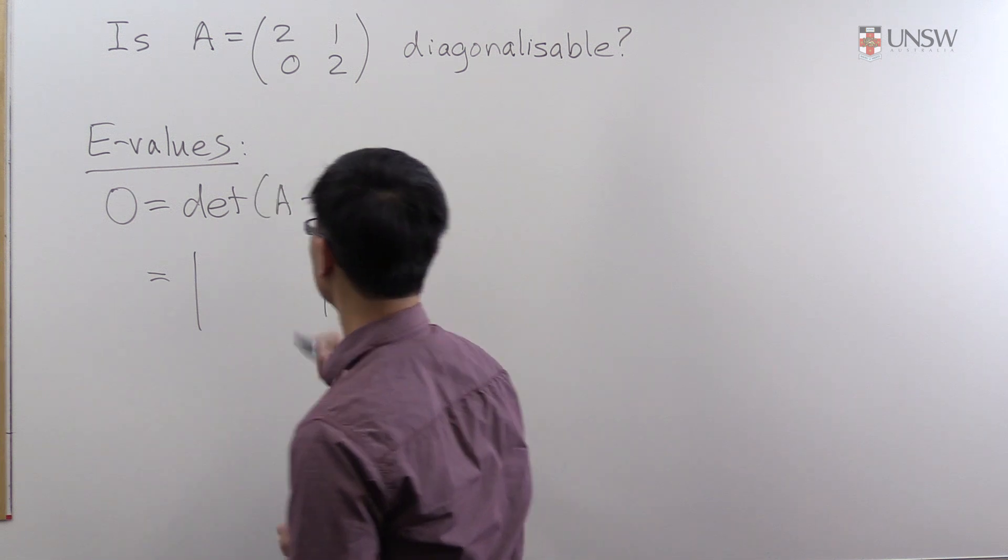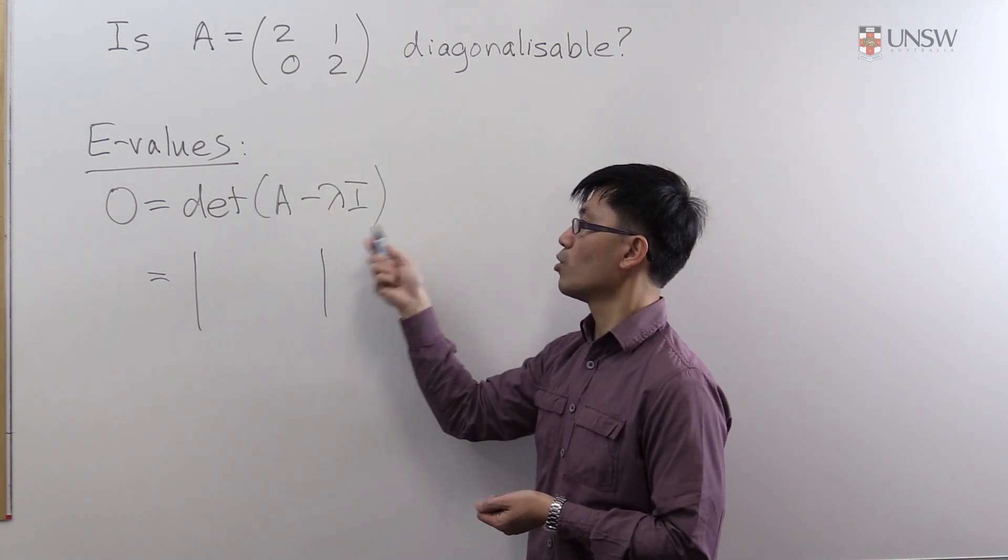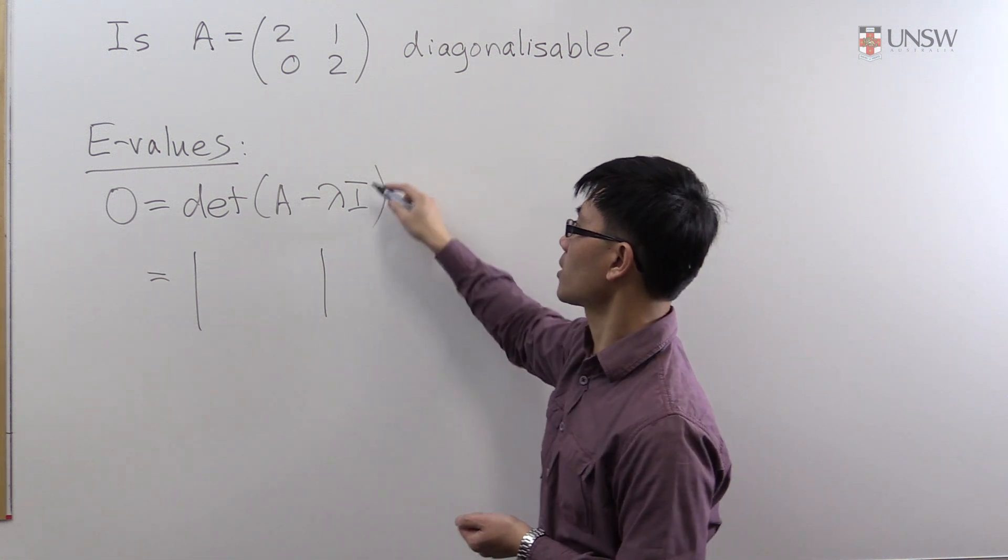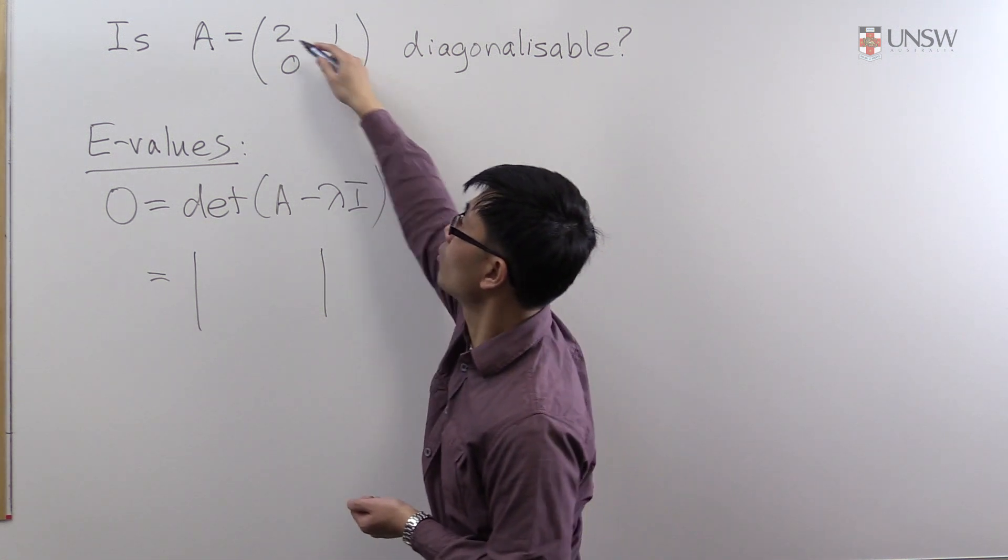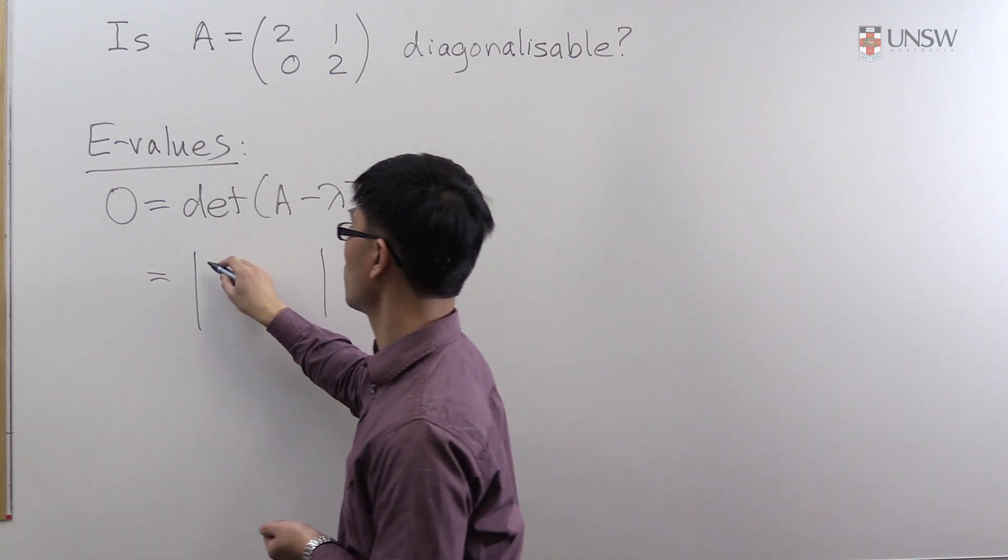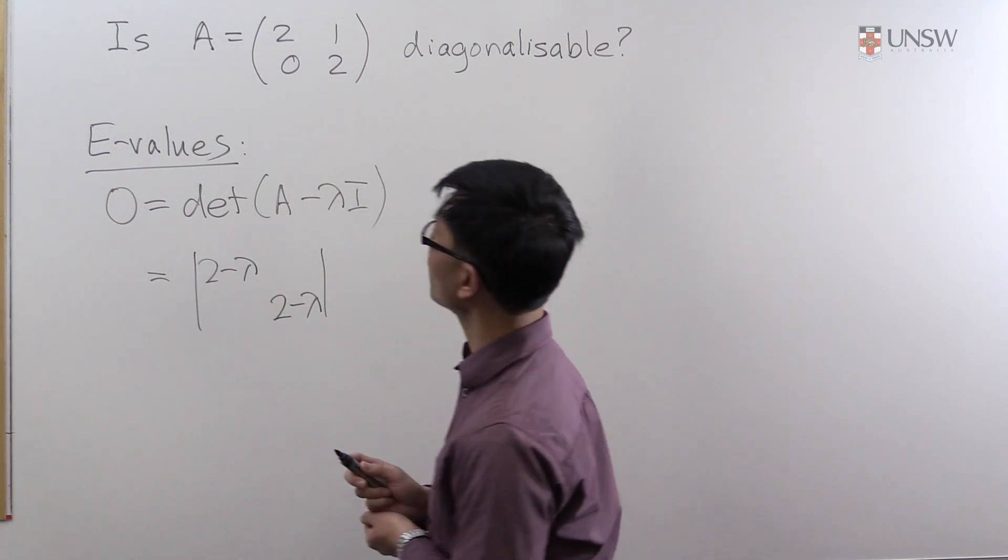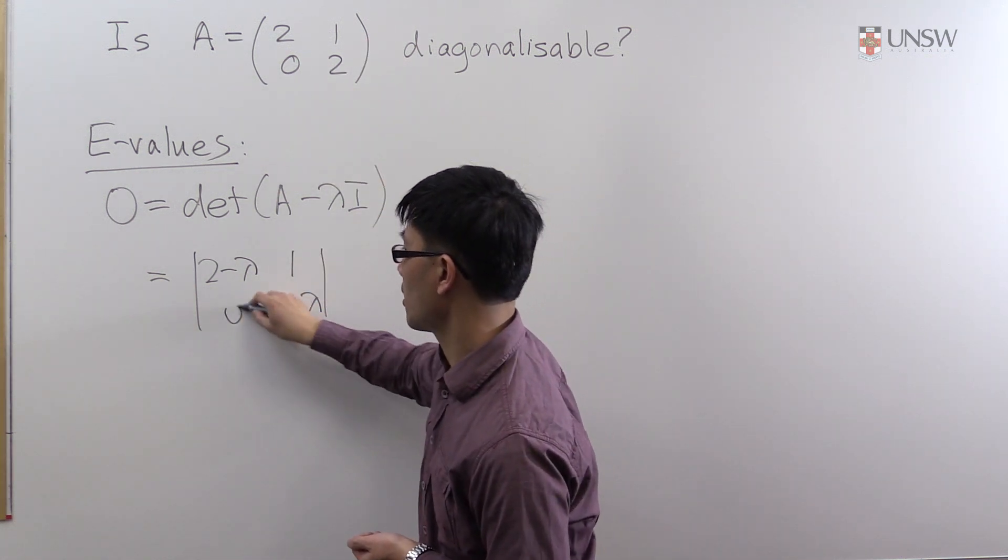So this determinant of this 2 by 2 matrix is found by subtracting lambdas from the diagonals of this matrix. So you have 2 - λ, 2 - λ on the diagonals, and these off-diagonal entries stay the same.